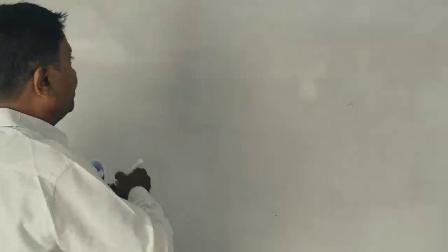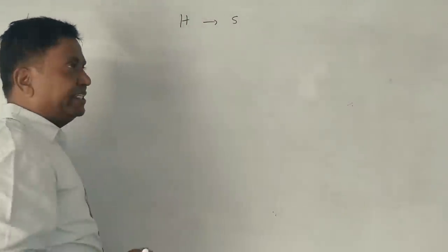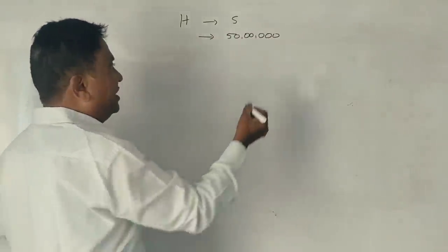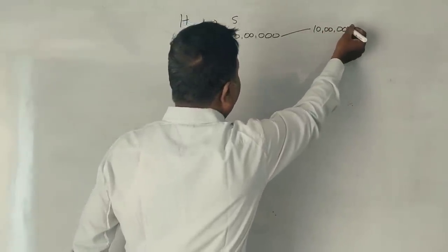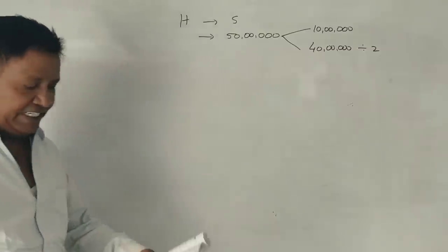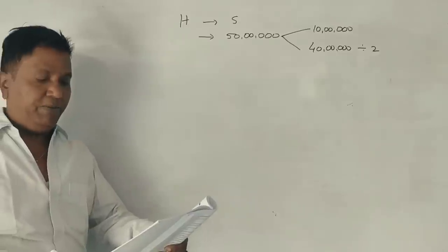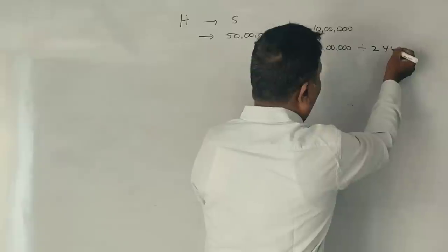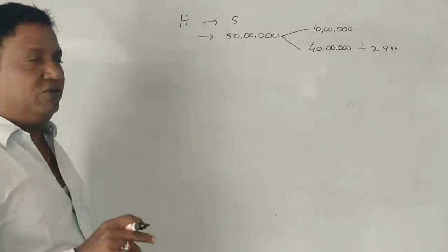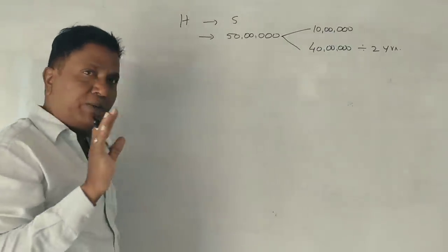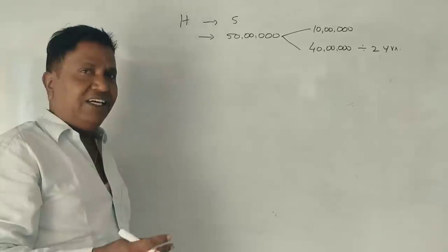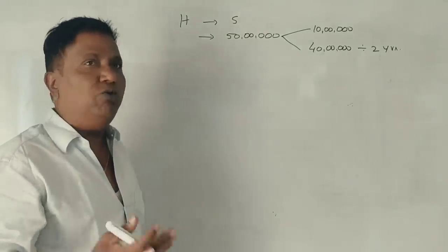H company purchases S company shares for a total consideration of 50 lakh rupees. Immediate payment is 10 lakh rupees in cash. The remaining 40 lakh rupees is payable in two equal installments — 20 lakhs in the first year and 20 lakhs in the second year. What is the total cost of investment for H company?